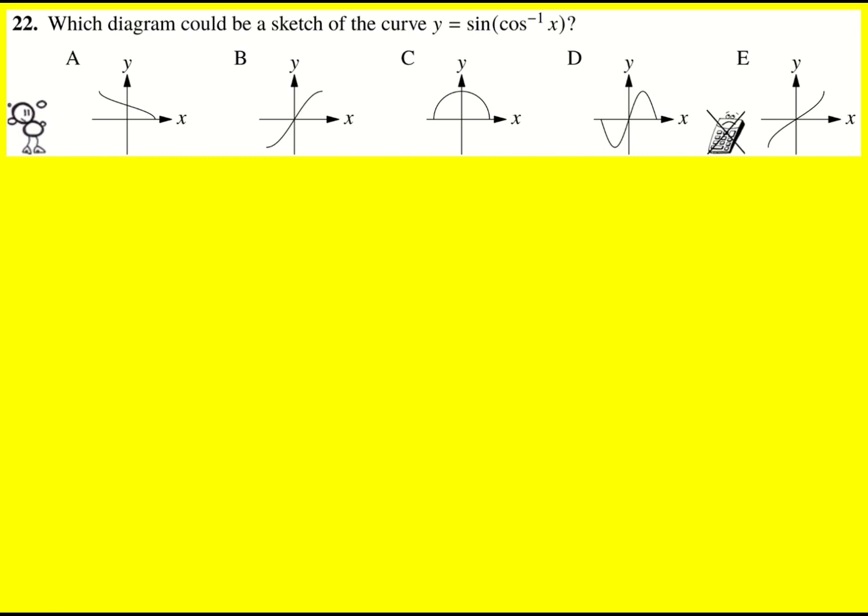First up, we've got y equals sine of inverse cos of x. Now the point that jumps to mind for me is x equals zero, because if we can work out what's going on, we can rule out some of the graphs very quickly. So that would be y equals sine of inverse cos of zero. What that is asking us is what angle gives us zero, essentially, and it's this one here, it's 90 degrees. I'm working in degrees here.